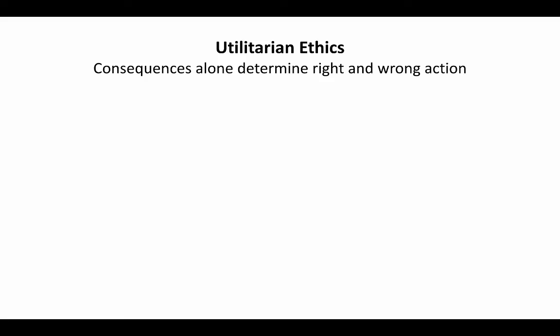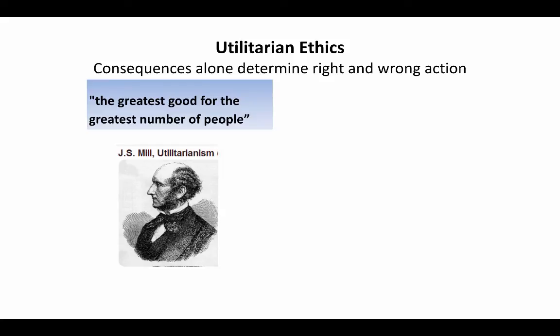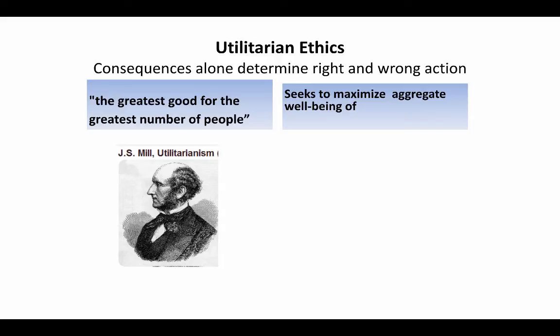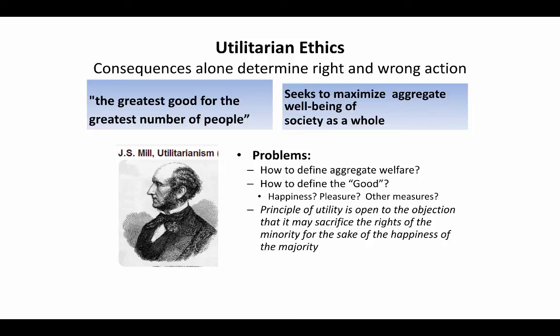Utilitarian ethics encompasses the notion that consequences alone determine right and wrong action. One of the fathers of utilitarianism is John Stuart Mill. Utilitarian ethics favors acts that produce the greatest good for the greatest number of people, seeking to maximize aggregate well-being of society as a whole. Some problems with utilitarian ethics include: how does one define aggregate welfare? How does one define the good — is it merely happiness, pleasure, or some other measure? Also, the principle of utility is open to the objection that it may sacrifice the rights of the minority for the sake of the happiness of the majority.